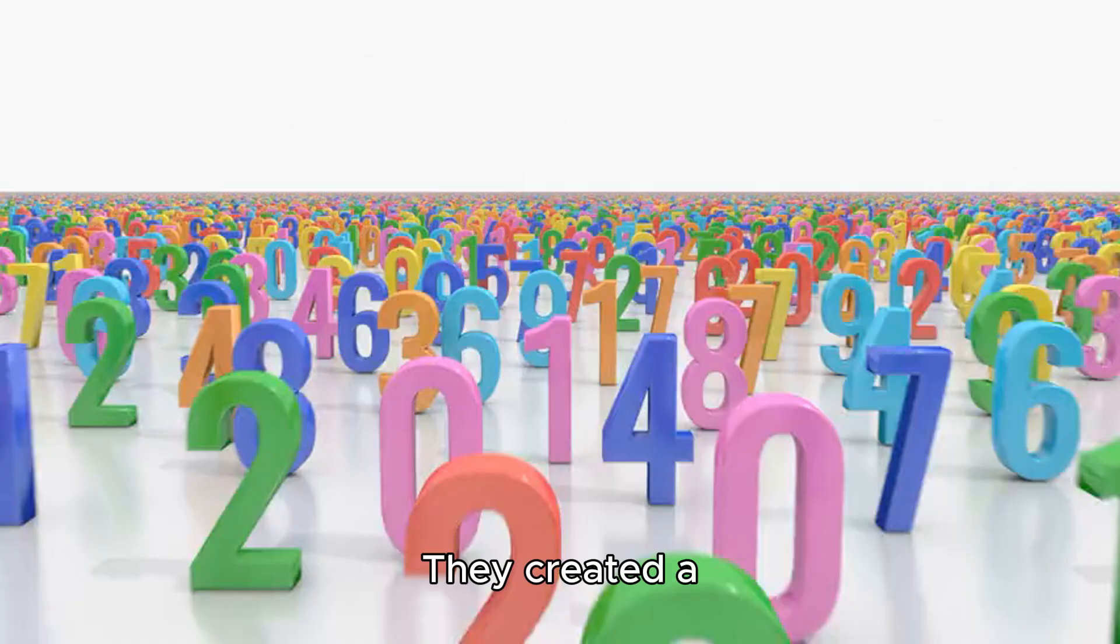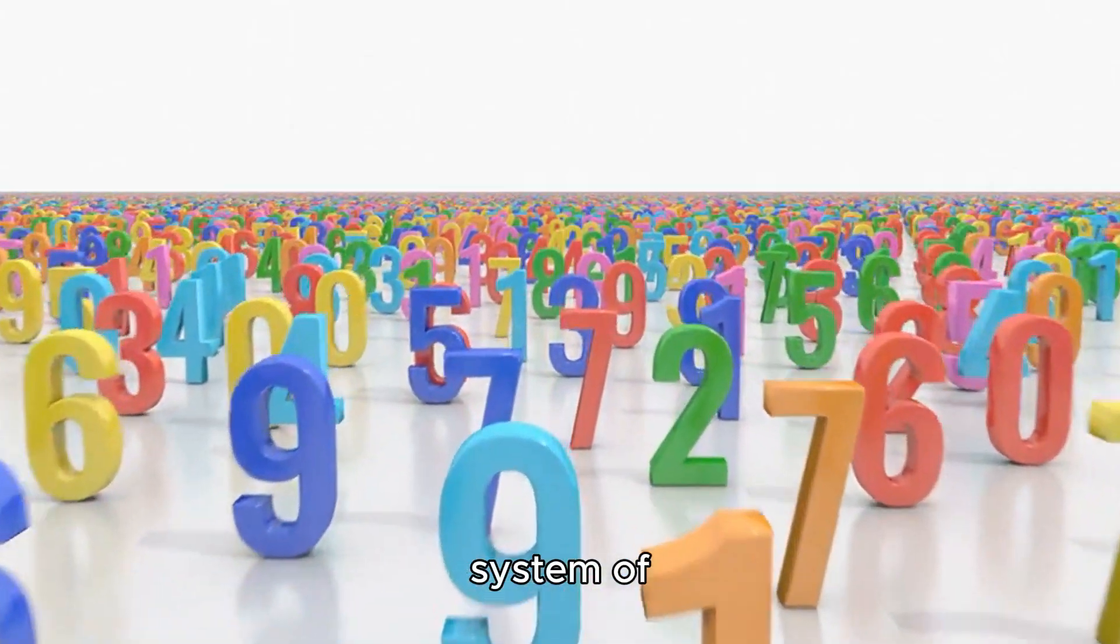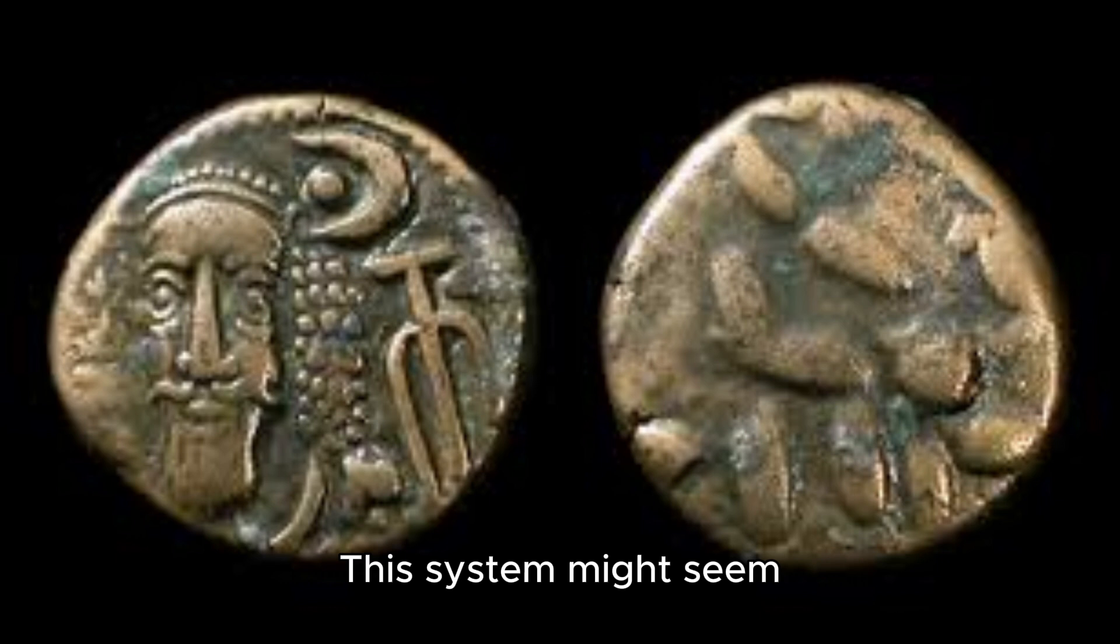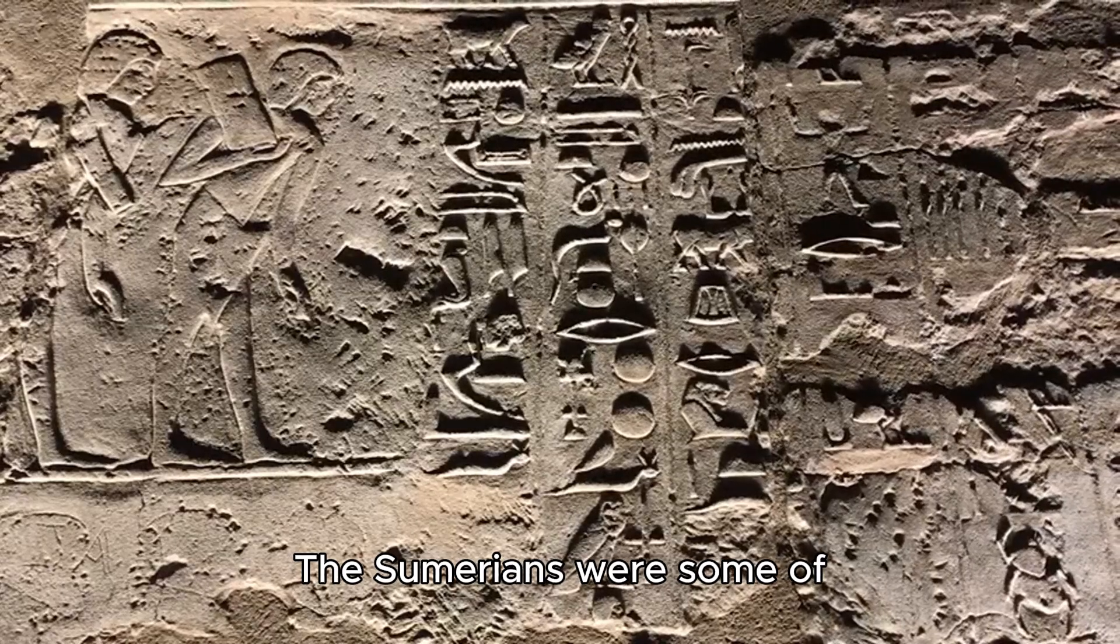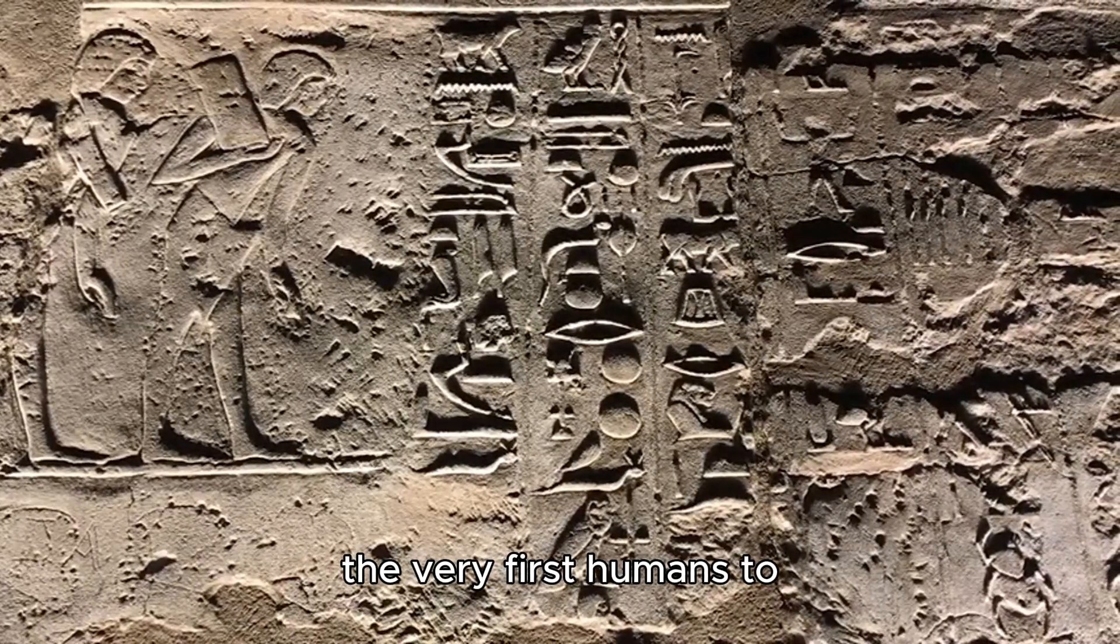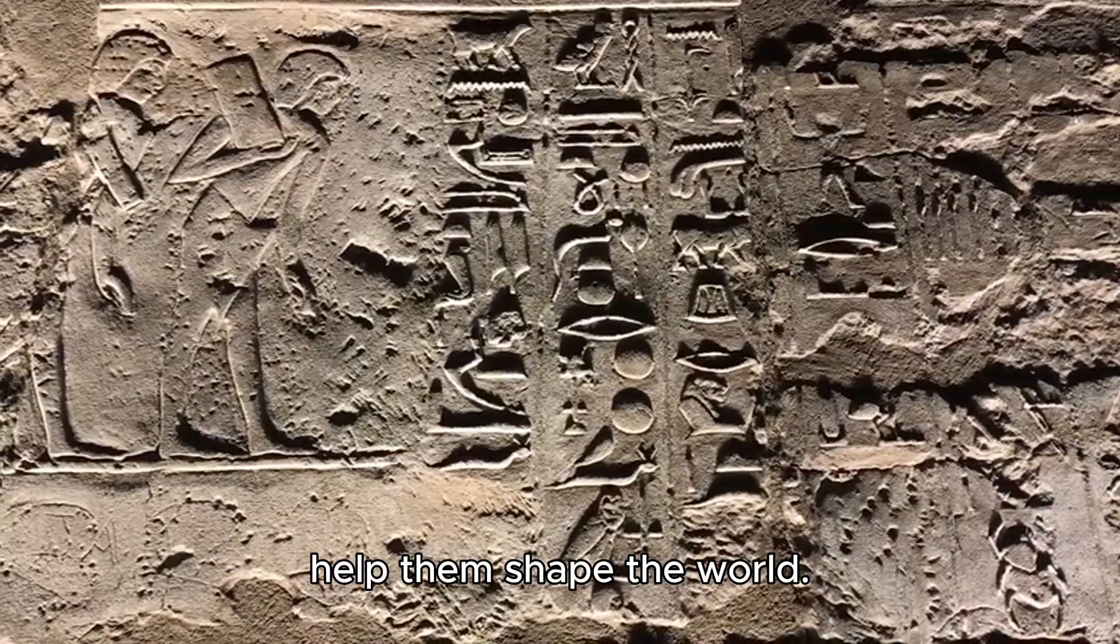What did they do? They created a system of numbers, one based on 60. This system might seem strange to you now, but it's why we have 60 minutes in an hour and 360 degrees in a circle.